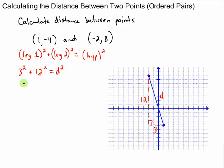So this is the Pythagorean Theorem. So we see that 9 plus 144 equals D squared. So D squared equals 153. So the distance between these two points would be the square root of 153. And you can put this in your calculator and find a decimal approximation. Okay?